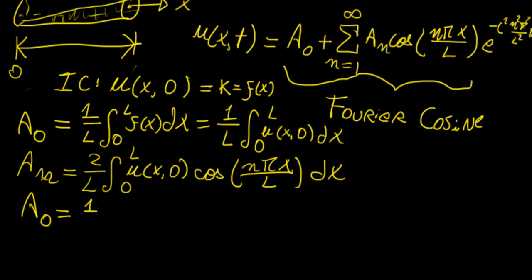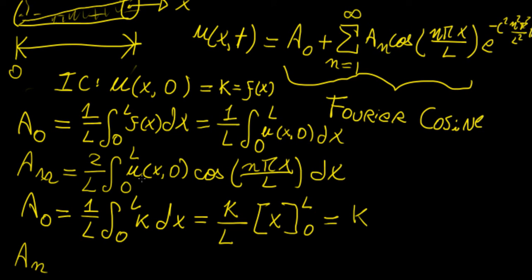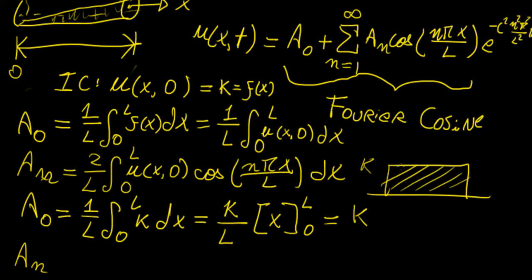Let's find a₀ first. This is going to be 1 over l of the integral from 0 to l of k dx, which gives k over l times x evaluated from 0 to l, and this equals k. That makes sense because our temperature distribution is just a constant rectangle, so the average value has to be k.